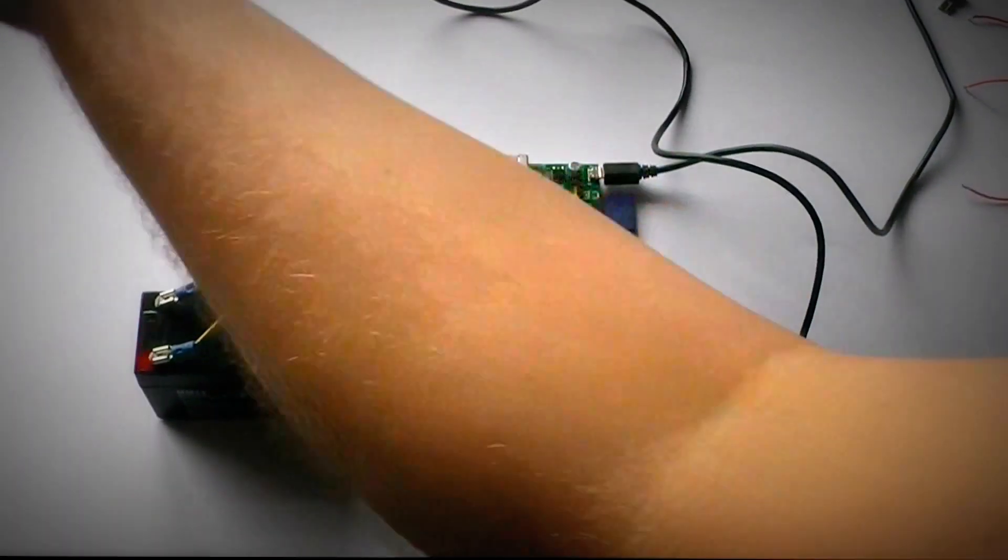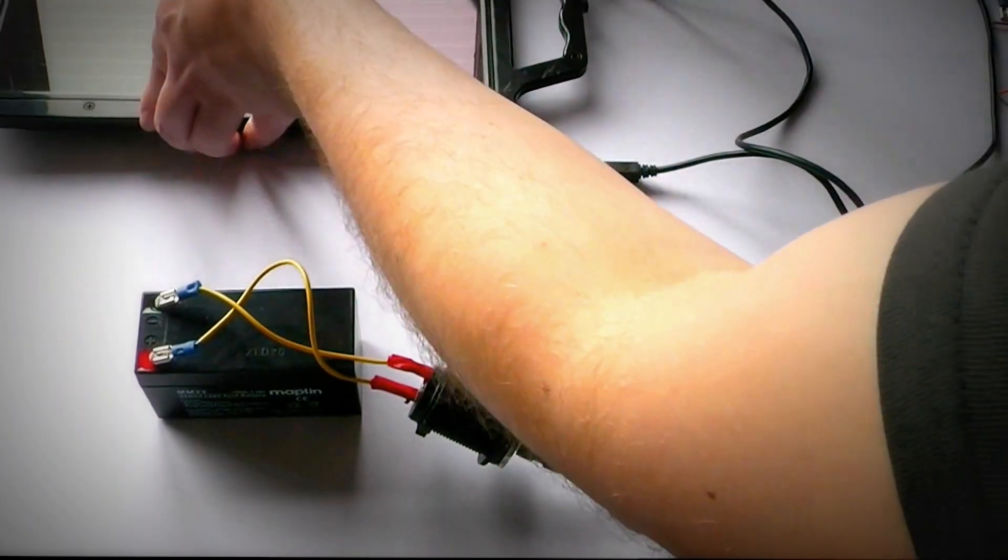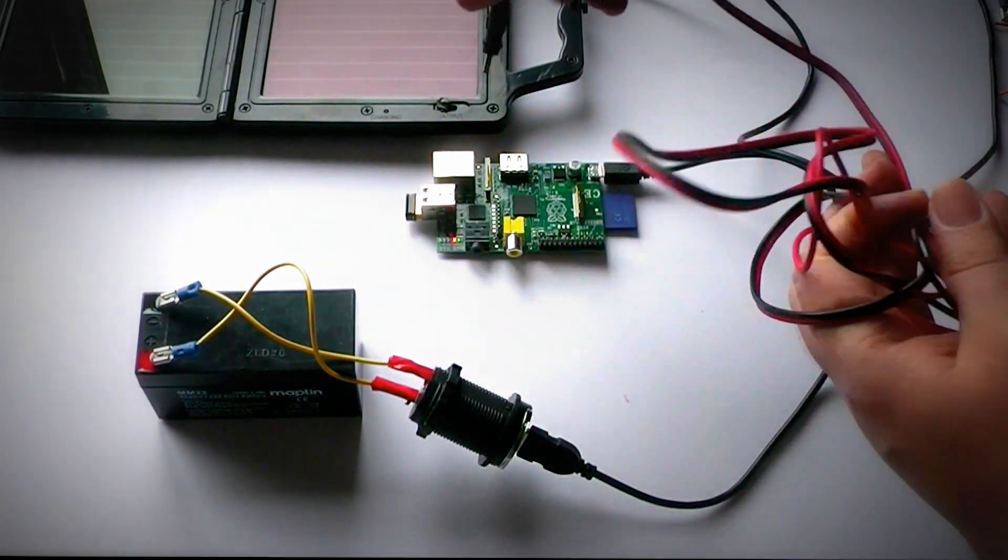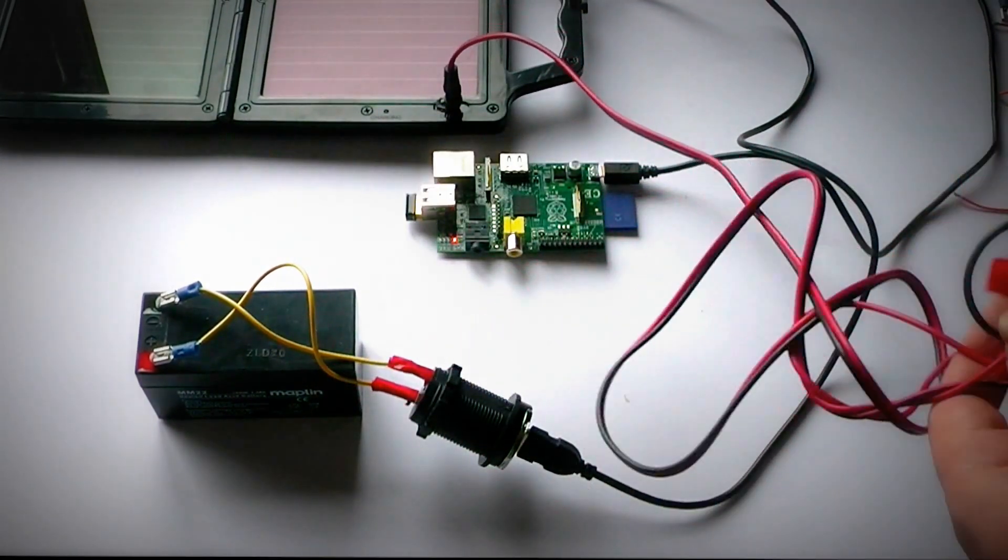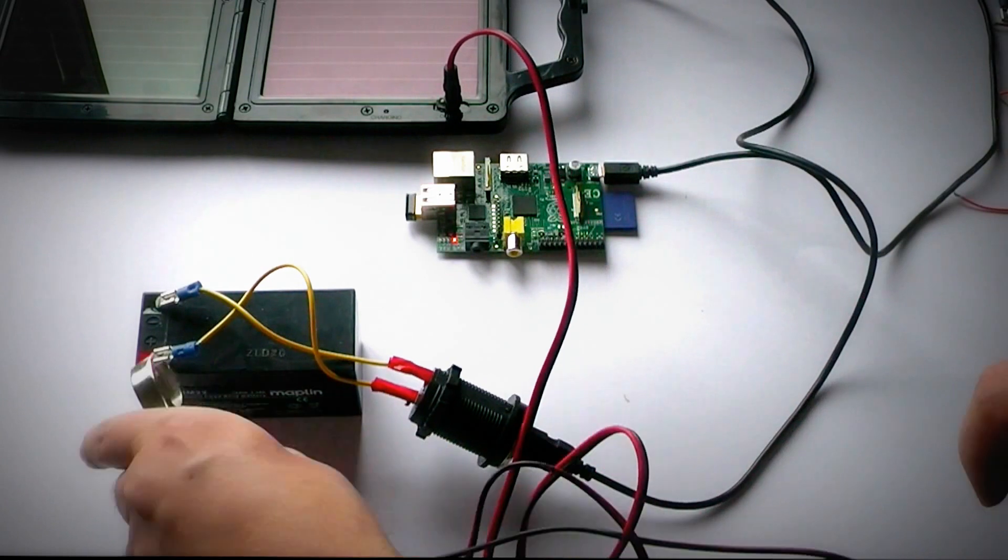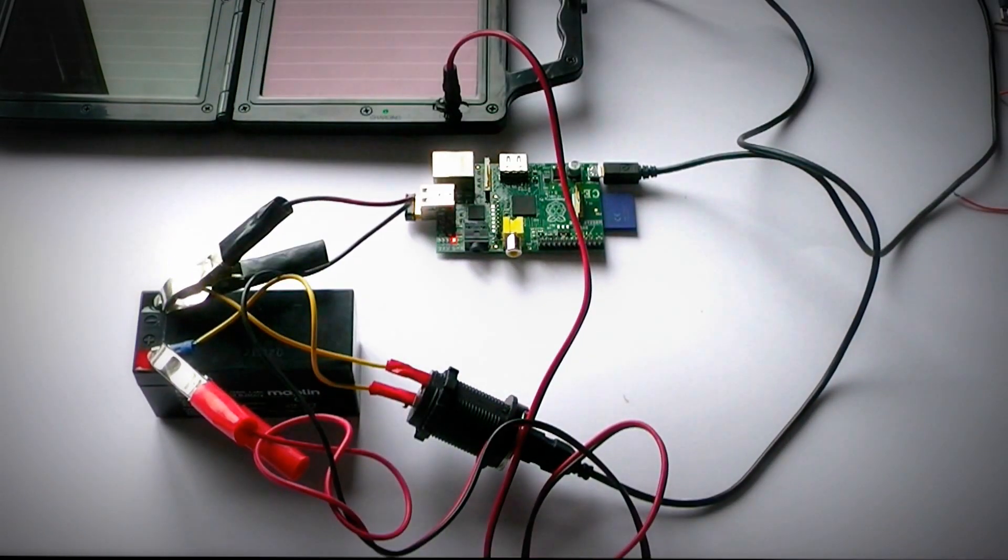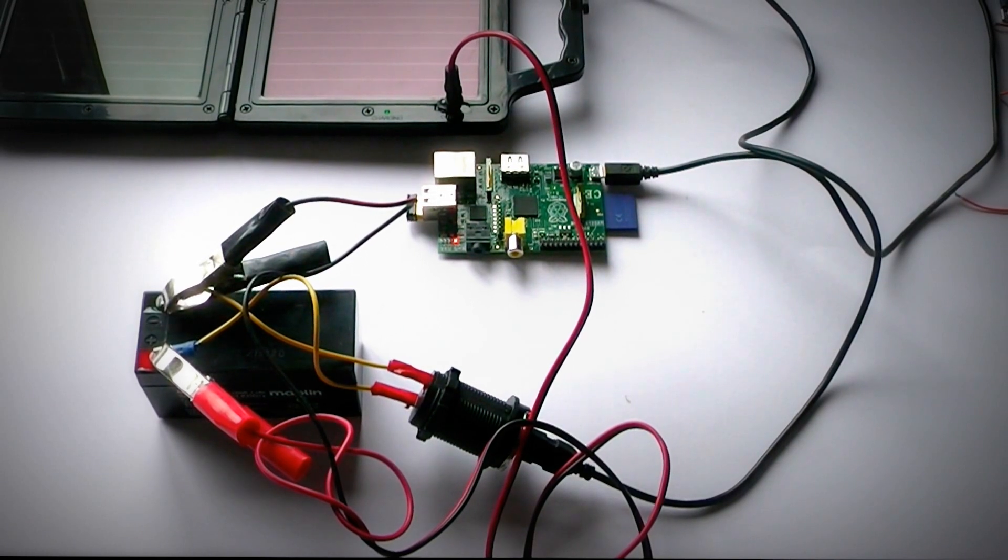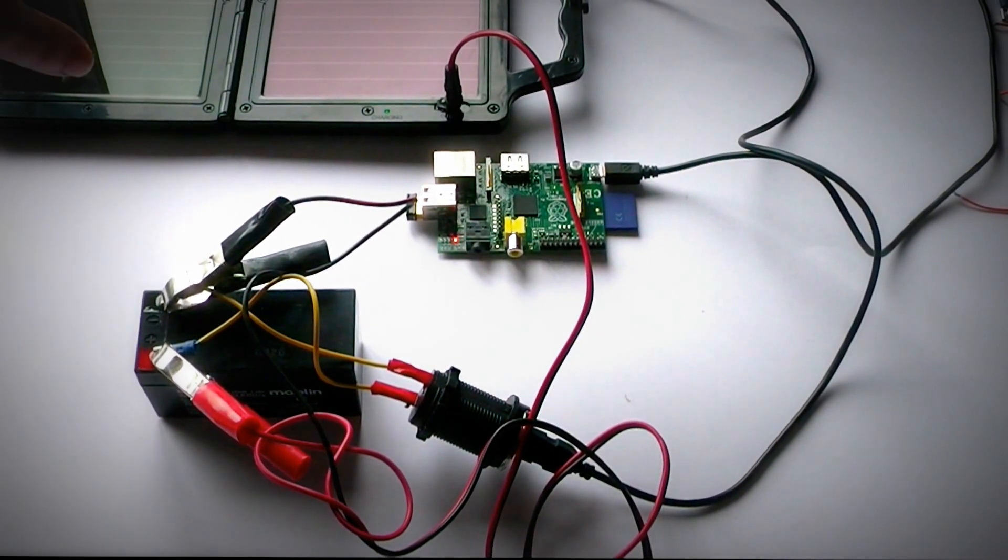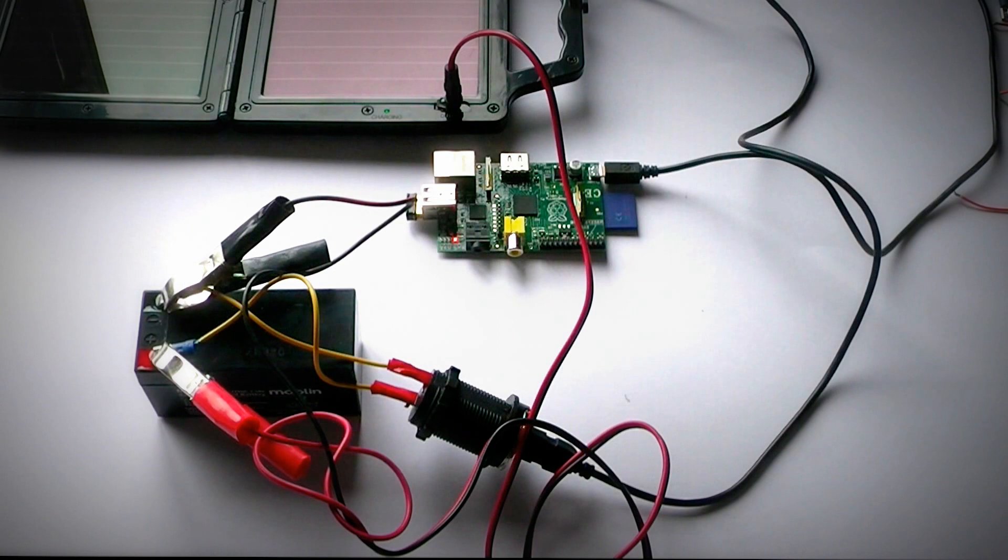And the final thing to do is connect the solar panel to the battery. There you go, the Raspberry Pi is now running off the battery, which is being charged by the solar panel.